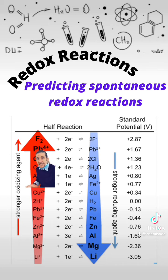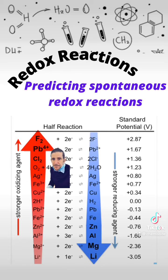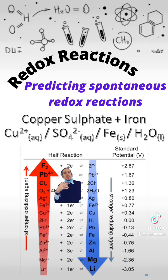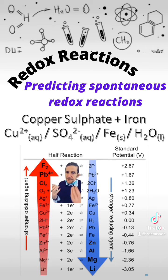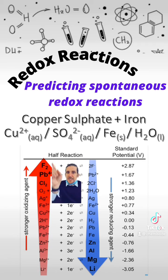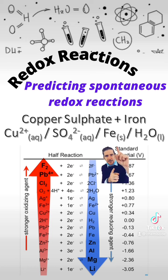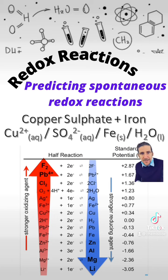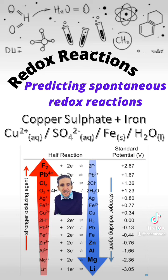Let's look at some examples and predict if we'll see a reaction occur. Our first example is adding iron into a solution of copper sulphate. The first thing we need to be aware of is what is present in this scenario. In copper sulphate, you've got copper two positive ions and sulphate ions. By adding in iron, you've also got iron solid. This is a solution, and that's why water is present — sometimes water plays a part in these reactions as well.